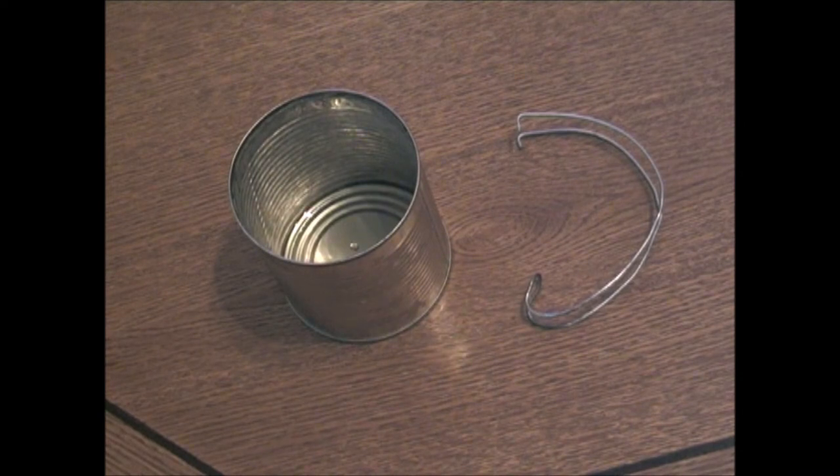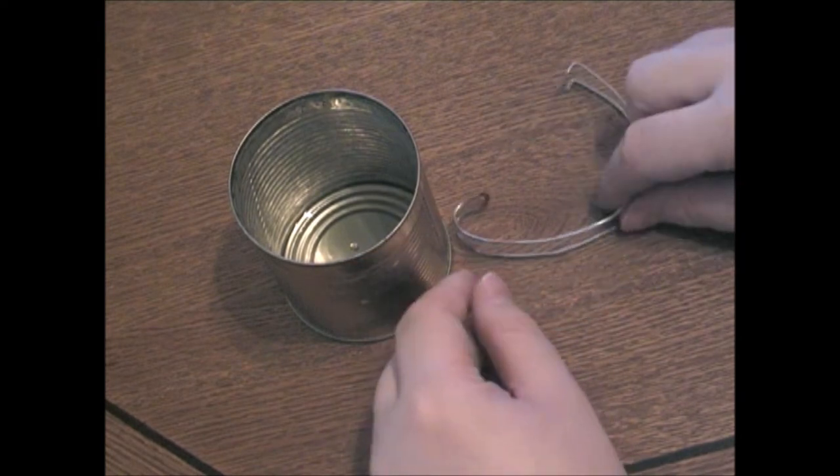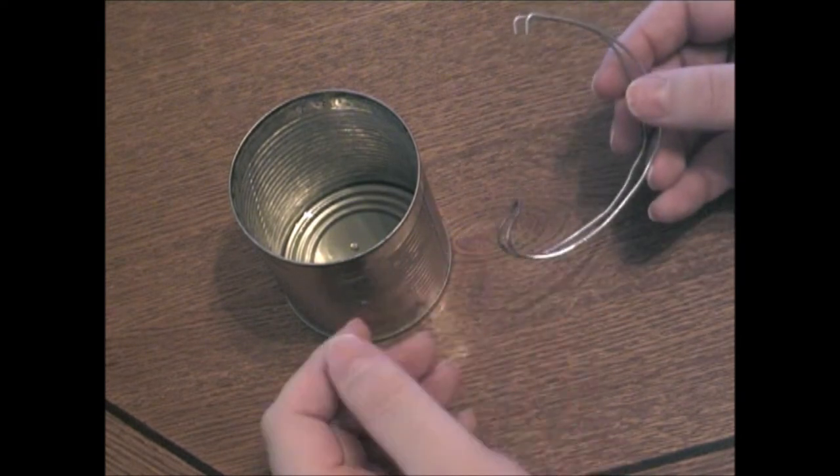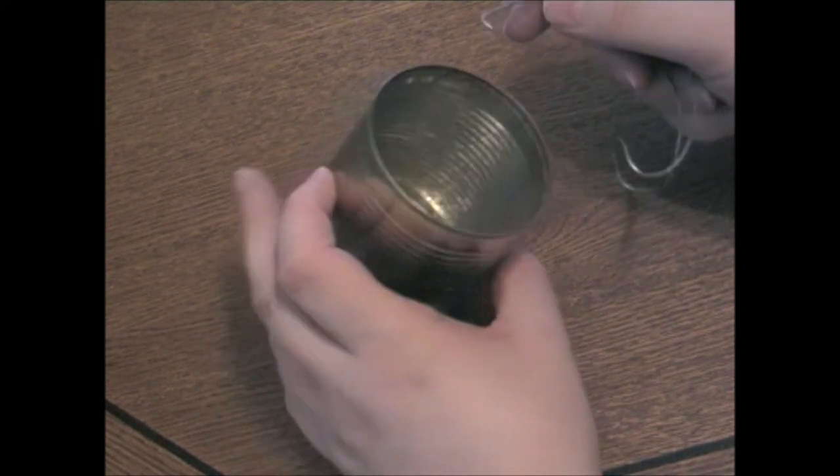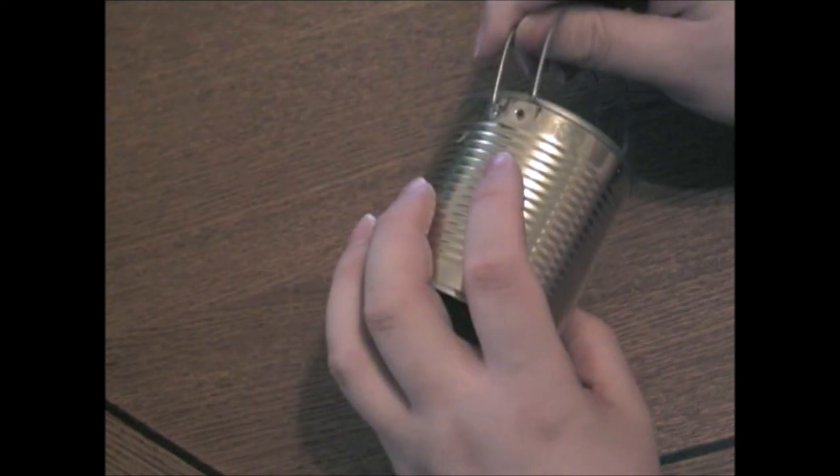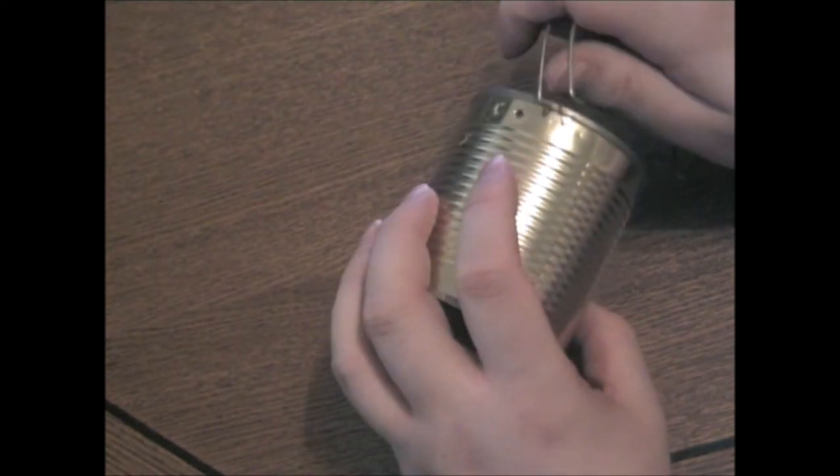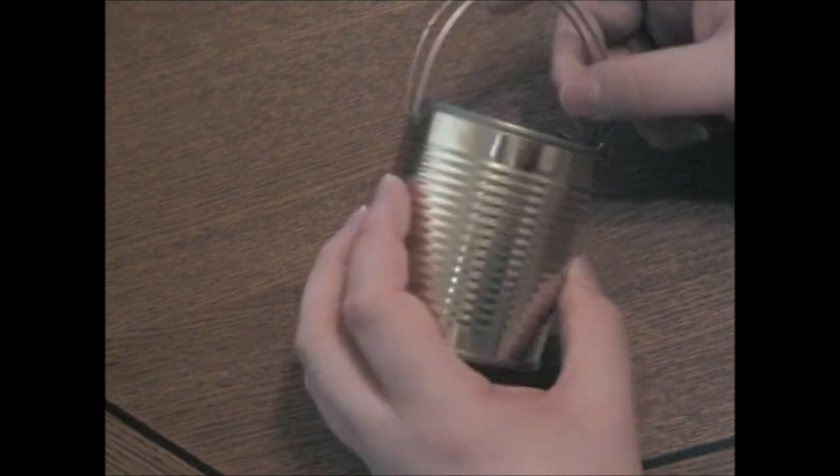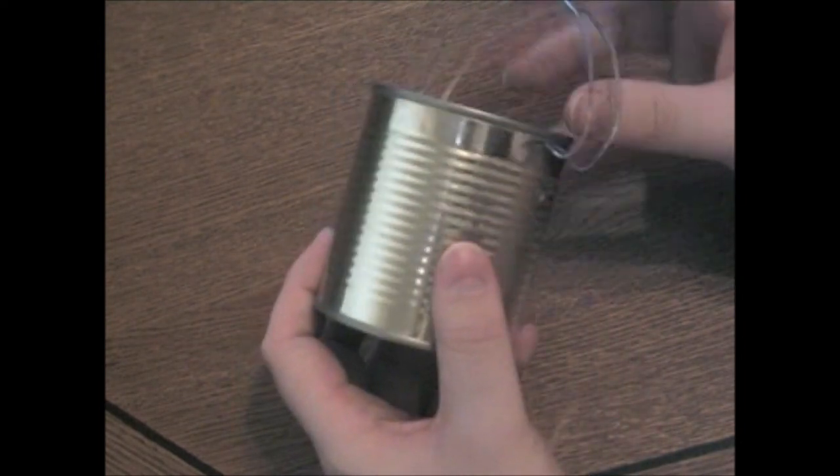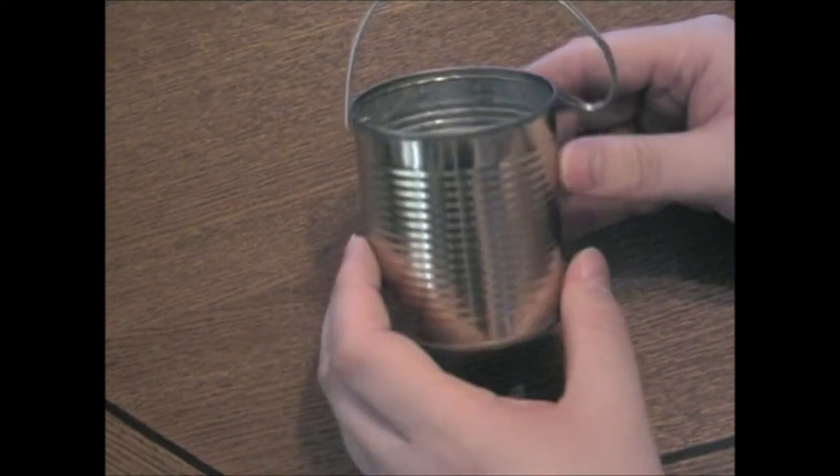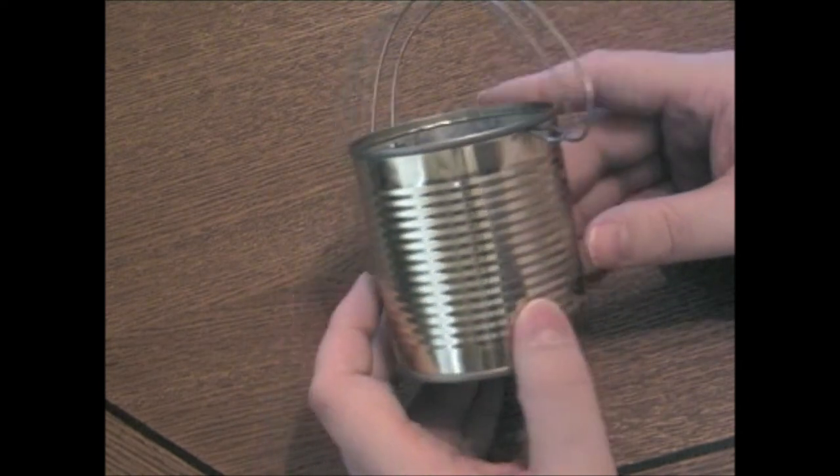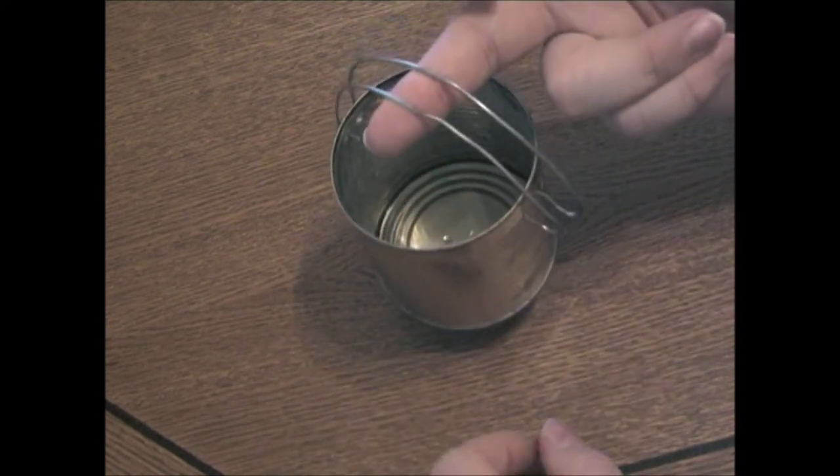And now let me show you how to assemble it. We take the wire and we put it in here, just simply like this. Then we hook it in here. And now what you have is the cooking mode, so to hang it over your fire.